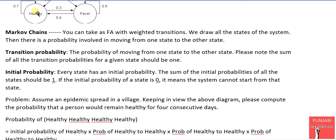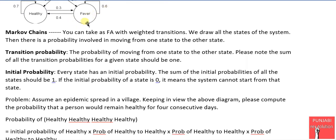Let's check the healthy state. It has two transitions: healthy to healthy with probability 0.7, and healthy to fever with probability 0.3. The sum of the two is 0.7 plus 0.3, which equals 1. Similarly, the fever state also has two transitions: fever to healthy at 0.4 and fever to fever at 0.6, and the sum of 0.6 and 0.4 is also 1.